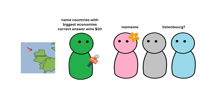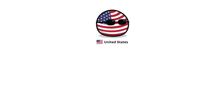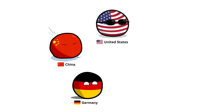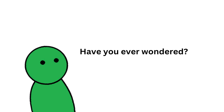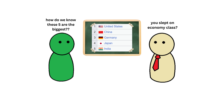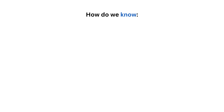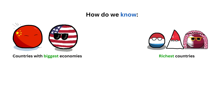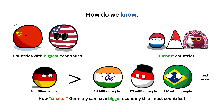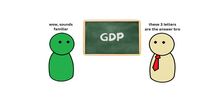If I asked you to name the countries with the biggest economies, you'd probably say the US, China, Germany, India, Japan, and other big countries. But have you ever wondered how do we actually know this? How do we know which country has the biggest economy, or how Germany with just around 84 million people can have a larger economy than many countries with more land and a bigger population? Well, we can know all this from something called GDP.